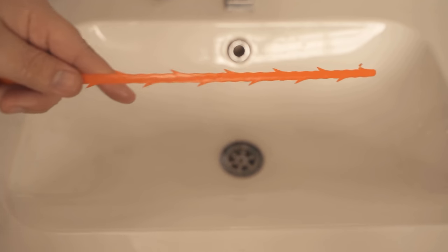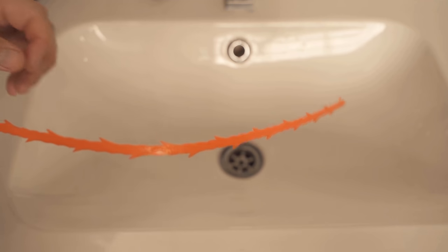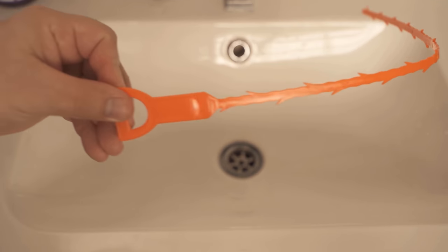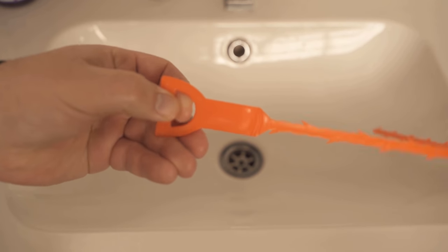It's a small device that has really nice prongs on the sides, is really long, and has a loop at the end where you can put your finger through and pull it. With it, you can get your drain clean again really quickly and easily.